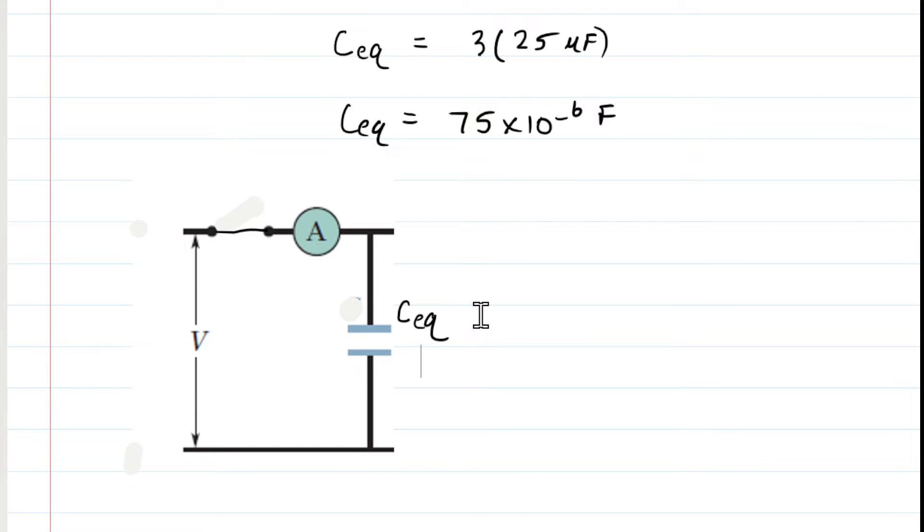Now that we have redrawn the circuit and obtained the equivalent capacitance value, we can calculate how much charge passes through the ammeter. We know the following relationship between charge, capacitance, and potential difference. It is given by this equation here.